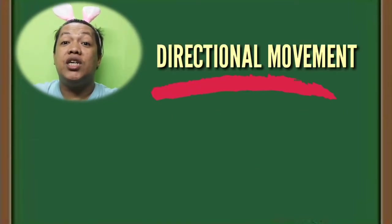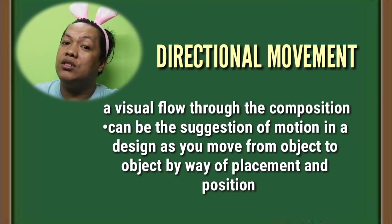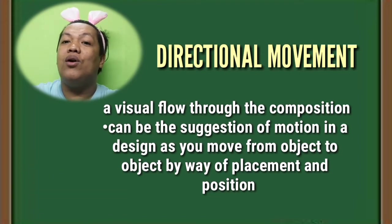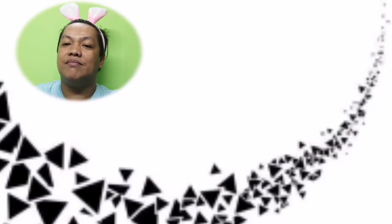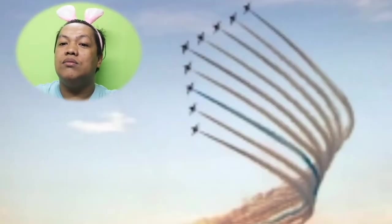The sixth visual design element refers to directional movement — a visual flow through the composition. It can be a suggestion of motion in a design as you move from object to object by way of placement and position. The best examples being displayed on your screens show the first and last movement of a design, including triangular shapes and the directional movement of airplanes.